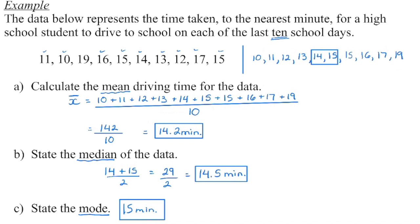The mean — this is the mean for our sample, X-bar — so we add all of our data values together and divide by the total. Remember, you have to put the numerator in brackets or press enter before you divide to get the accurate value. Median is the number in the middle: start on either end and walk your fingers into the middle. If there's an even number of data pieces, you have to average those two together — so halfway between those is 14.5 minutes.